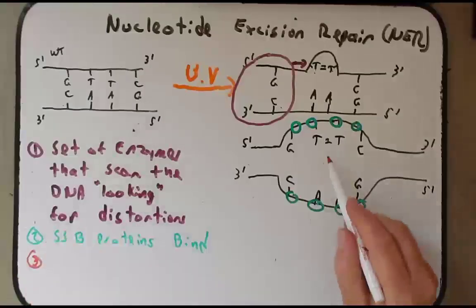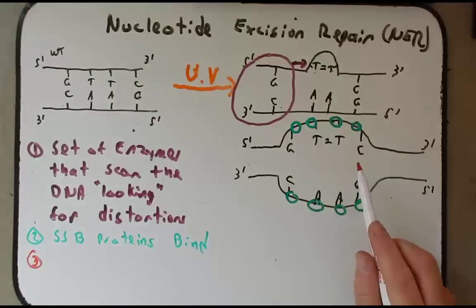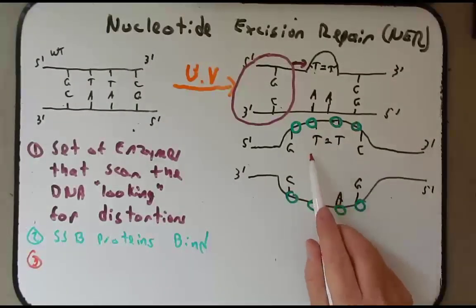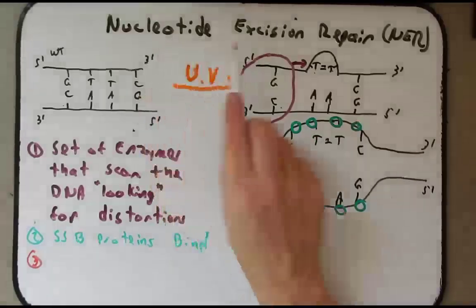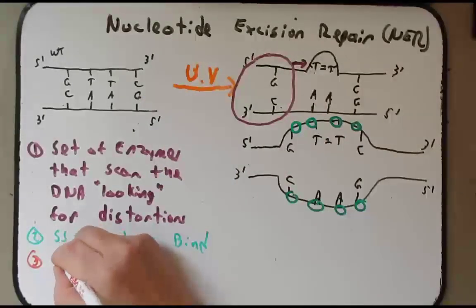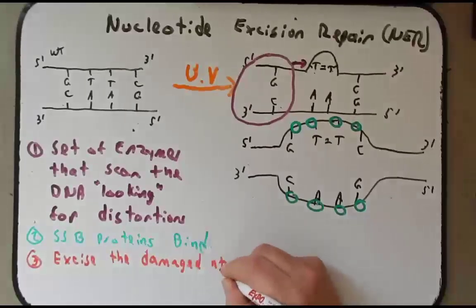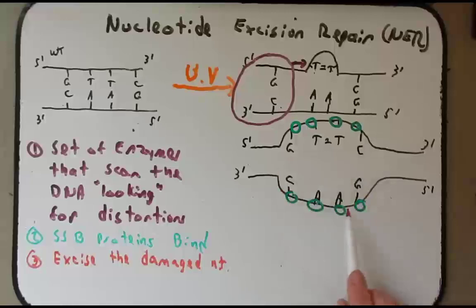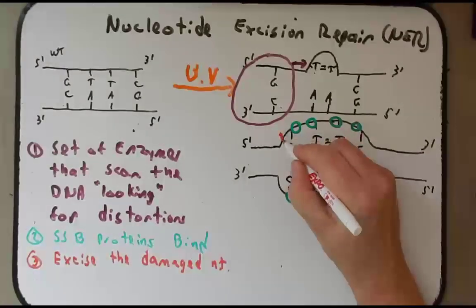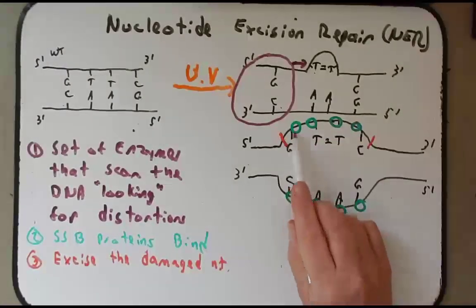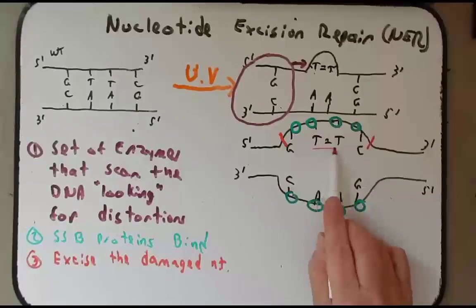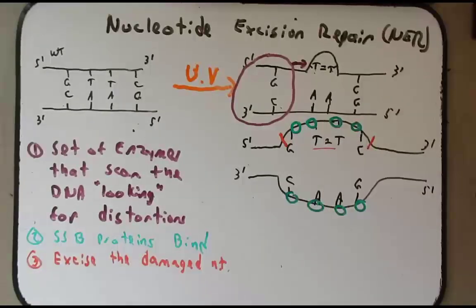The next thing that happens is that the nucleotides are removed. Remember with base excision repair, at first we only removed the base. But with nucleotide excision repair, we're going to excise damaged nucleotides, and not just the damaged ones but several other nucleotides around it. So it's going to cut along here and along here, and then this part here that contains the thymine dimers is going to be degraded and lost.